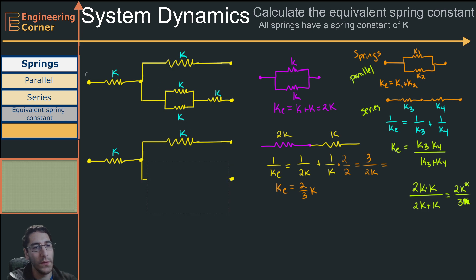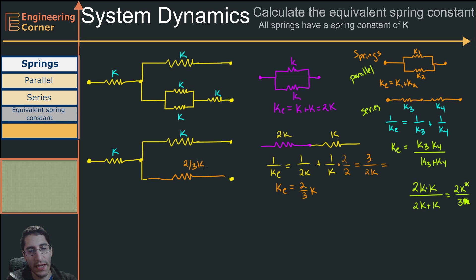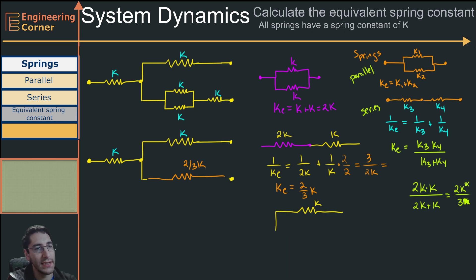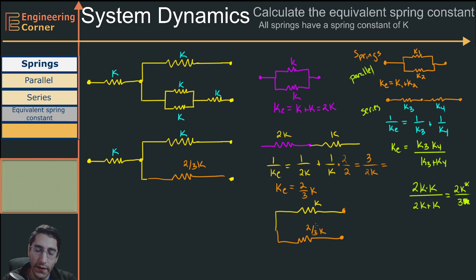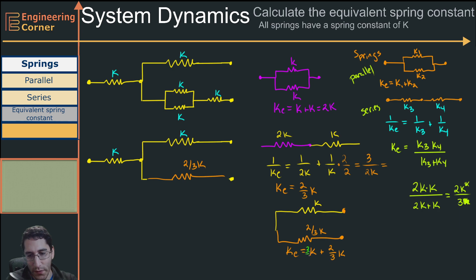I replace those series springs with an equivalent spring constant of 2/3 k. The next step: I have another spring in parallel — one with spring constant k and the one we just replaced at 2/3 k. Both are connected to the wall, so they are in parallel. The equivalent spring constant is k plus 2/3 k. Multiplying k by 3/3, I get 3/3 k plus 2/3 k, which equals 5/3 k.